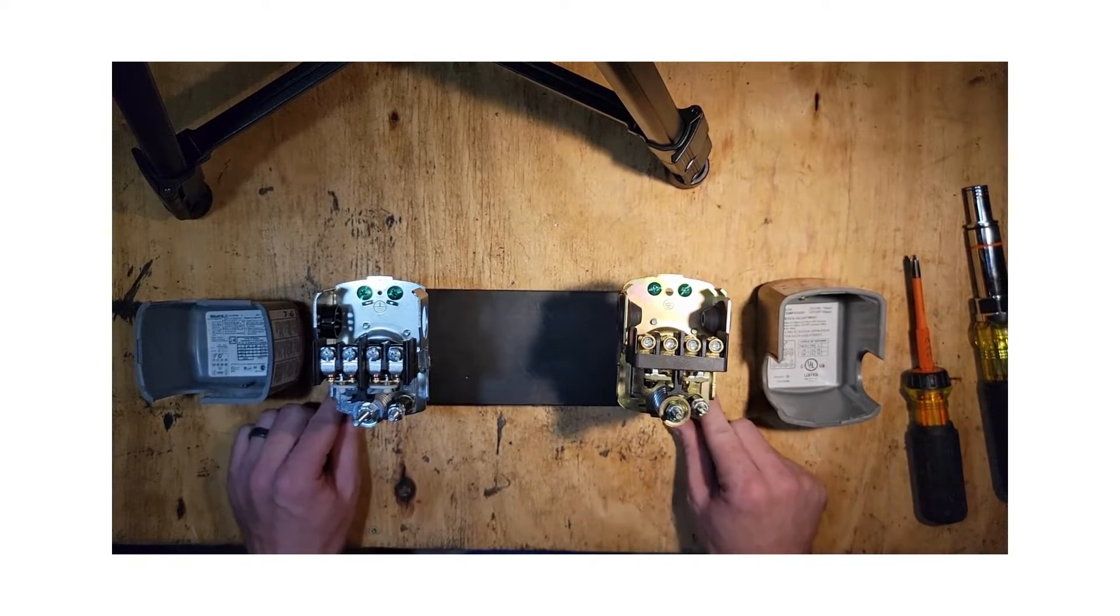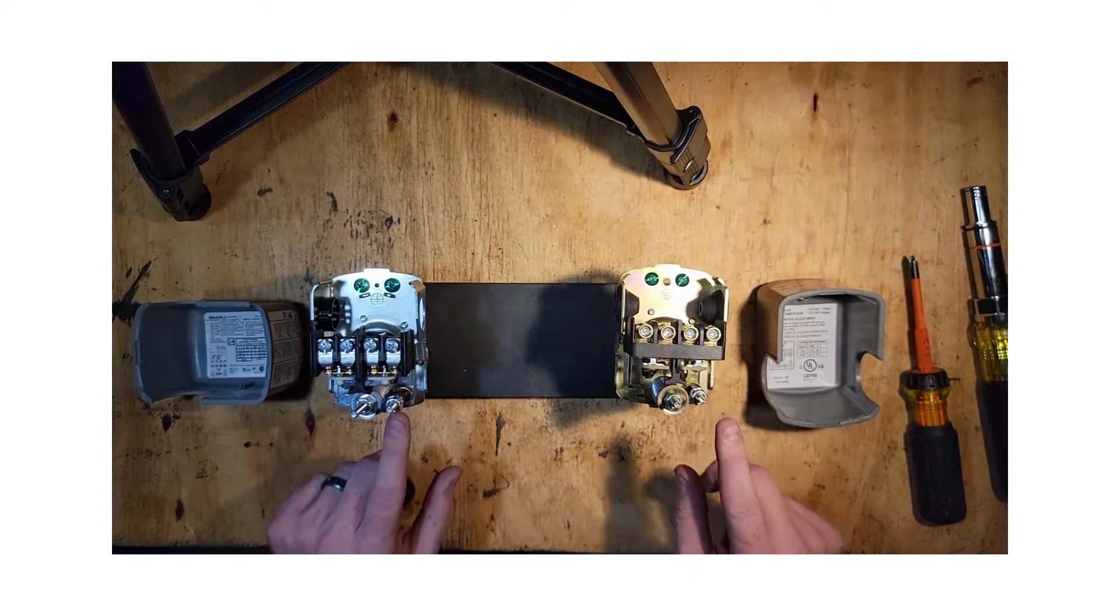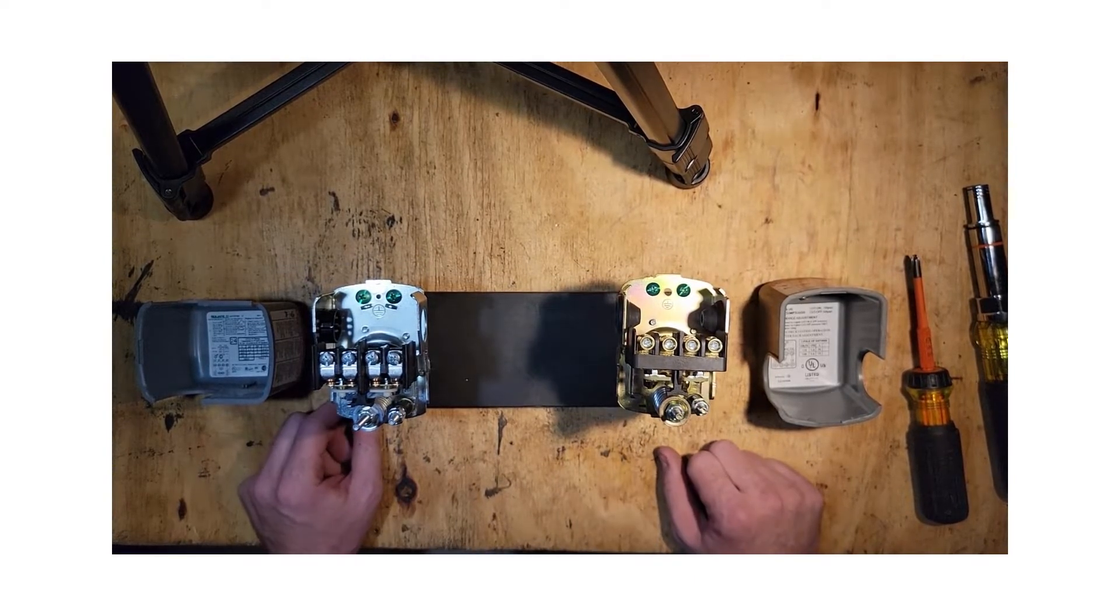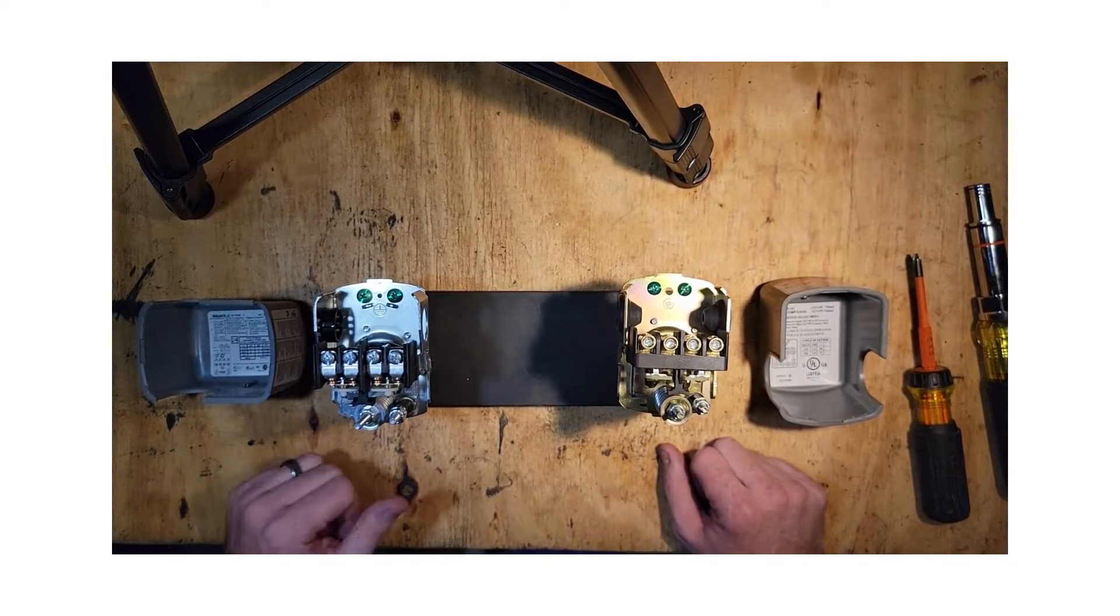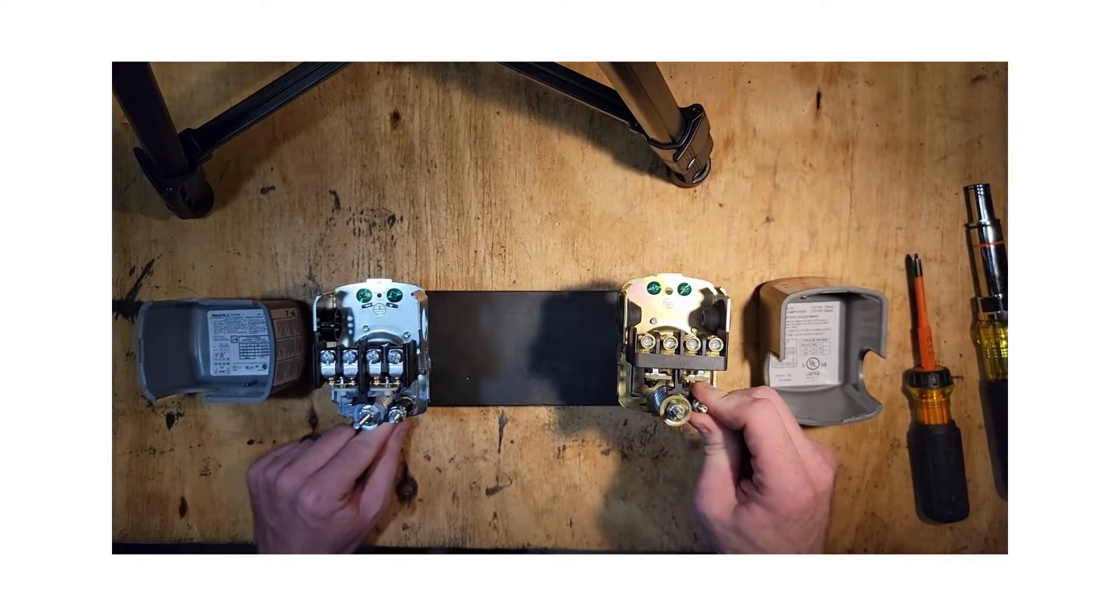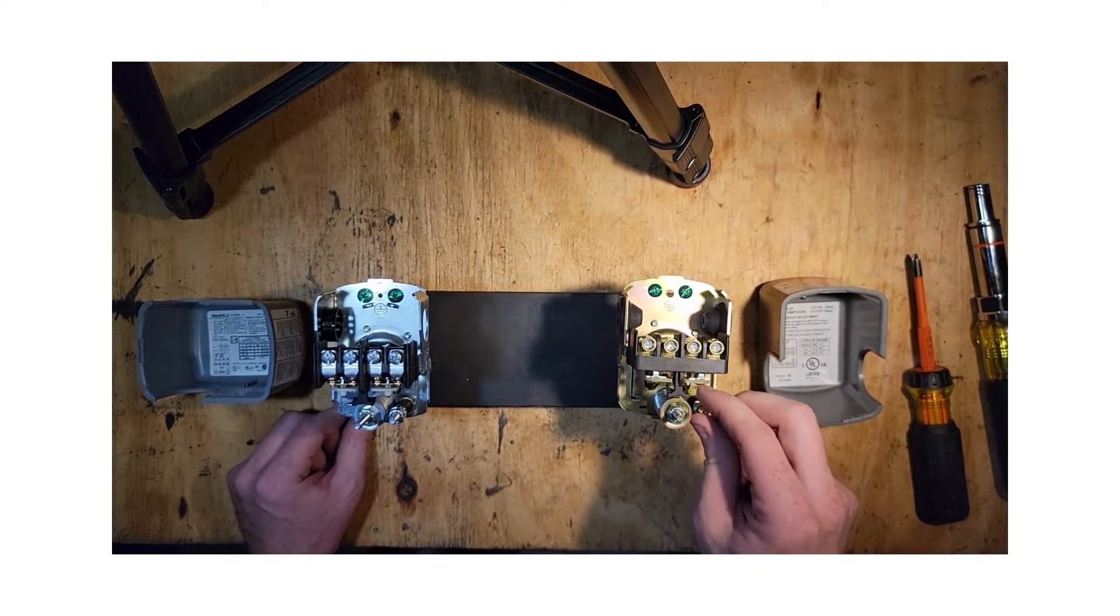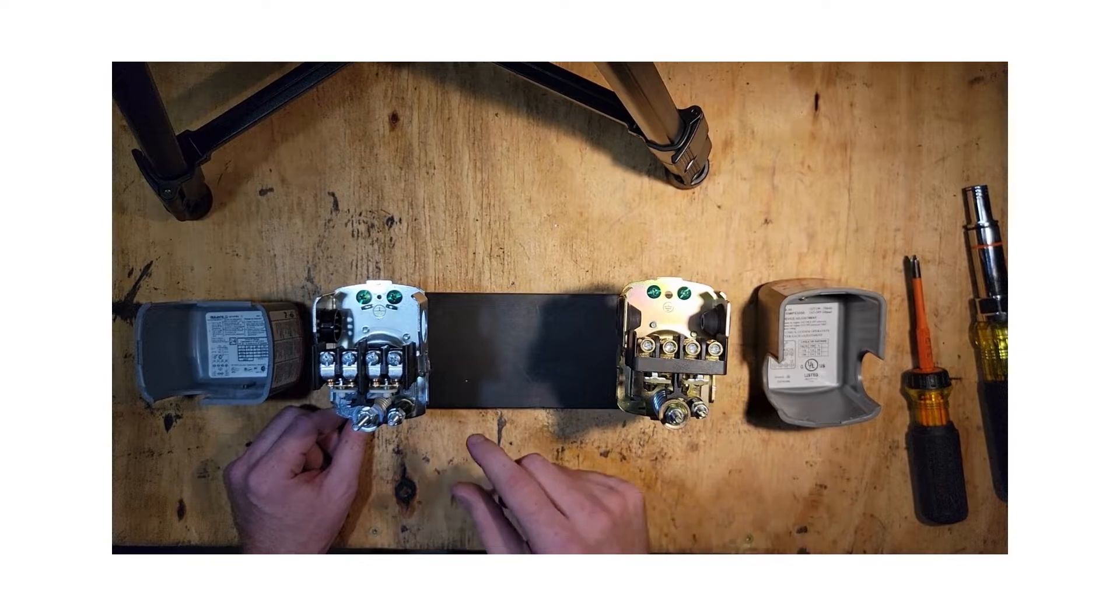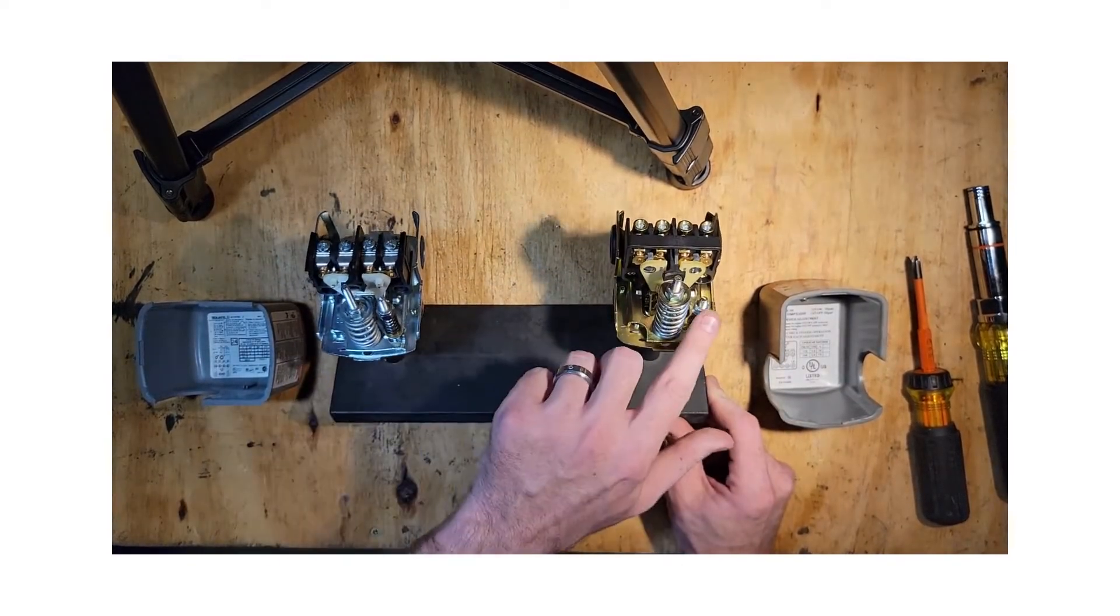Looking next at the smaller post, smaller nut here, that adjustment is just for the turn off or the cut off pressure only. So if I want to just change the pressure at which my pump turns off, I would only adjust the smaller spring loaded screw here.